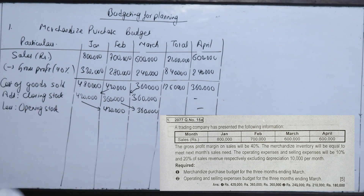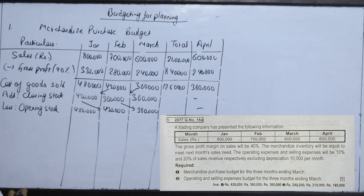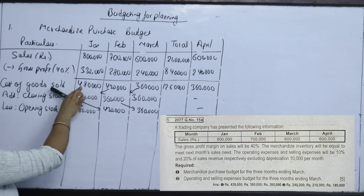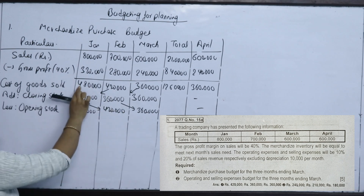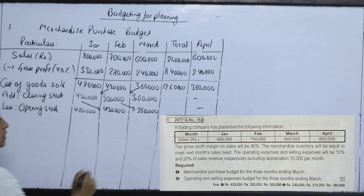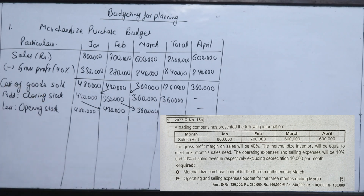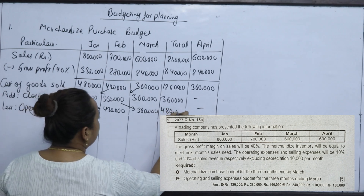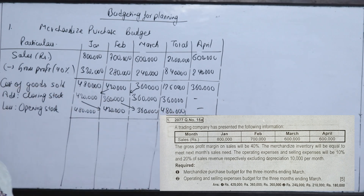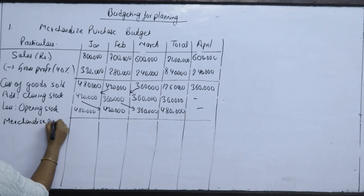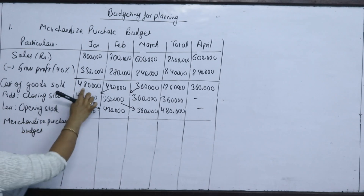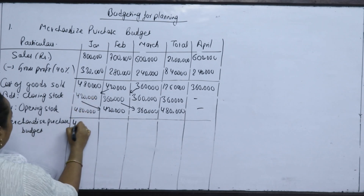For December's closing stock, we use the opening stock figure for January, which is 4,80,000. The Merchandise Purchase Budget formula is: Cost of Goods Sold + Closing Stock − Opening Stock. The totals are 4,20,000 and 3,60,000, giving a total merchandise purchase budget of 11,40,000.